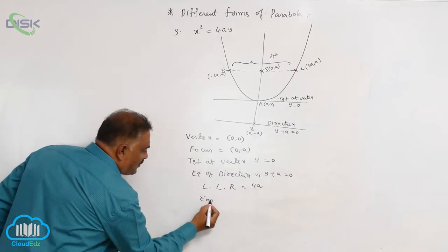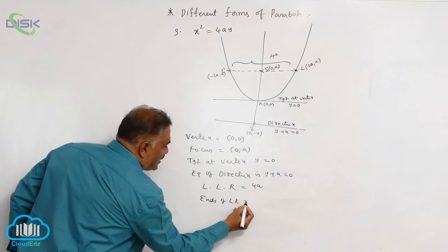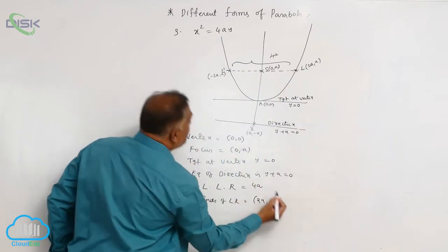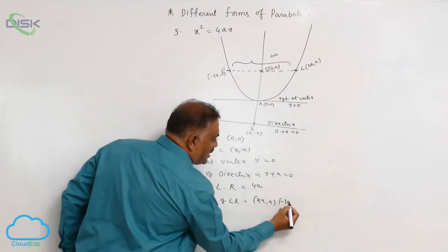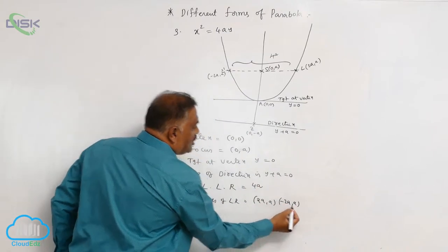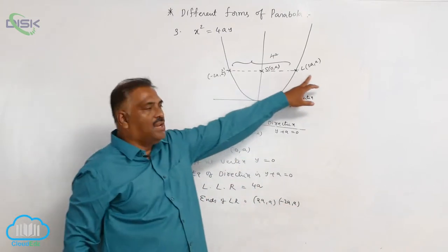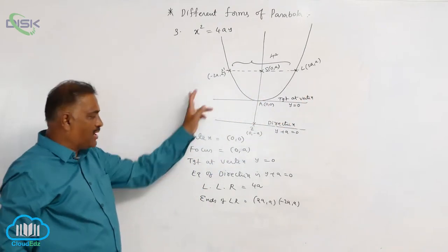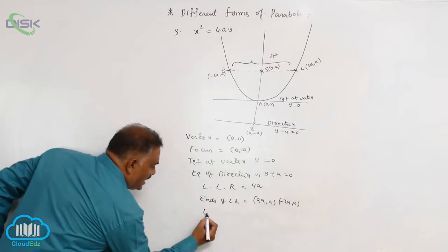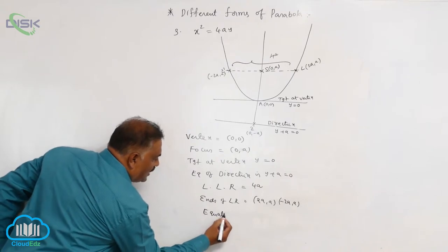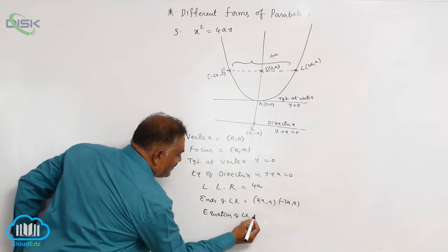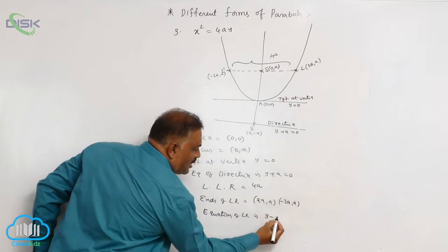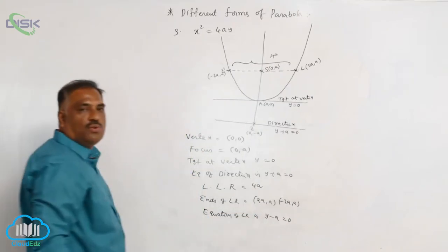The length of the latus rectum is 4a. The ends of the latus rectum are (2a, a) — which lies in the first quadrant — and (-2a, a) — which lies in the second quadrant. The equation of the latus rectum is y = a, or y - a = 0.